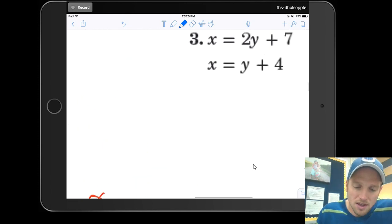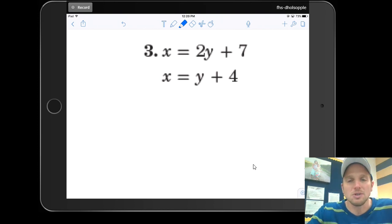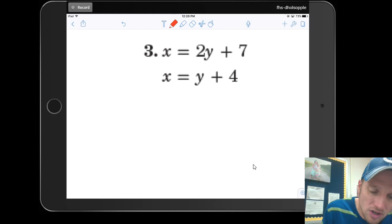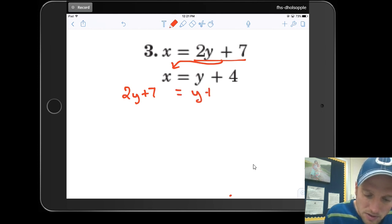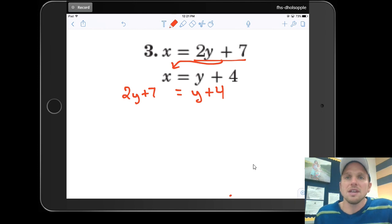Now there's one more that kind of causes people problems. This one. I had trouble with this one when I was in high school. It's kind of hard to see. Until you actually see it, then it's really easy. If I look at the top equation, I know x is the same thing as 2y plus 7. So I'm going to take 2y plus 7 and sub it in for x in the second equation. So instead of writing x, I'm just going to write 2y plus 7 is equal to y plus 4.